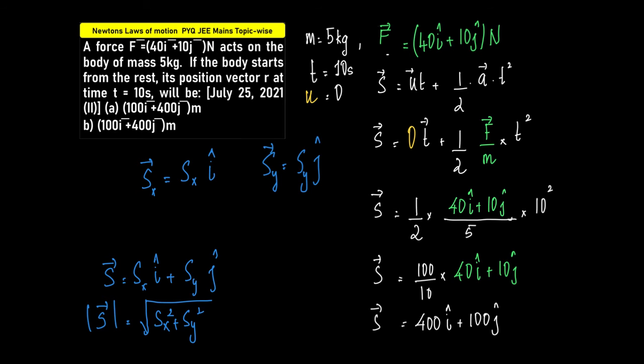Since this body starts from rest, the initial velocity vector will be equal to 0. So all we have is S is equal to half at square. What is A? A is F by M.